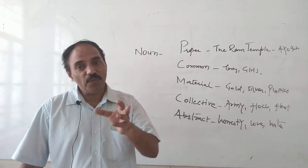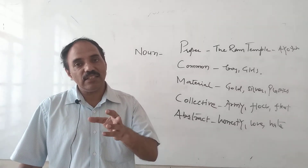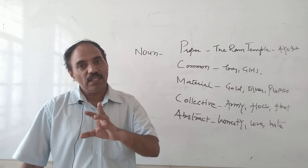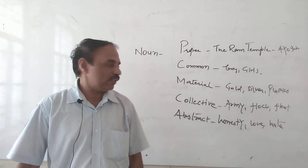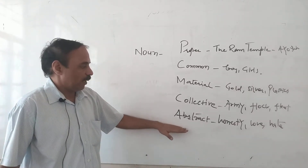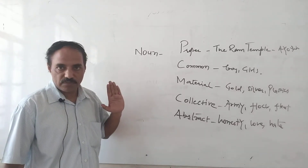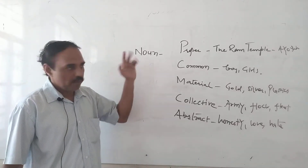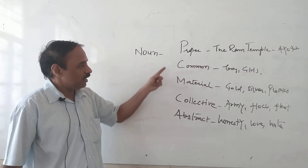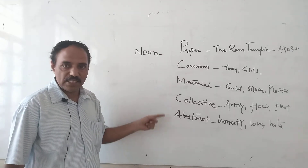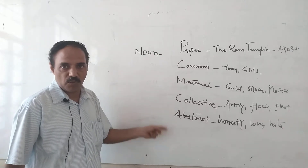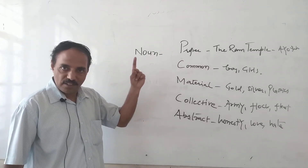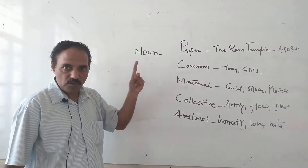So, cannot be seen, cannot be tested, but can be felt. P, C, M, C, A - okay.